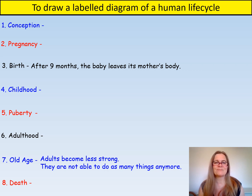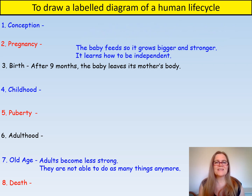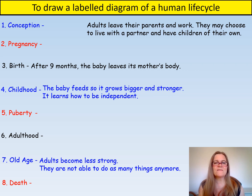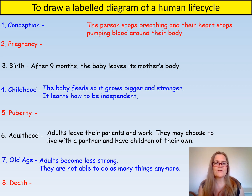However, some are still able to run marathons. What about 'the baby feeds so it grows bigger and stronger and learns how to be independent'? Yes, this is childhood. You were a baby and have eaten for ten years so you are now bigger, stronger and fairly independent. What about 'adults leave their parents and work'? They may choose to live with a partner and have children of their own — yes, this is adulthood. Some may choose to have children. How about 'a person stops breathing and the heart stops pumping blood around their body'? Yes, unfortunately a person dies when their heart stops pumping blood around their body.